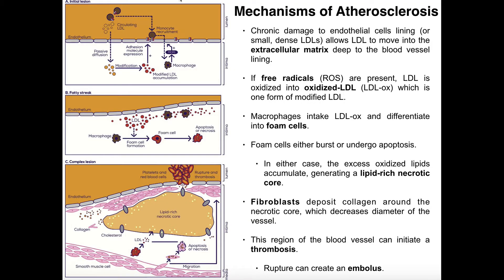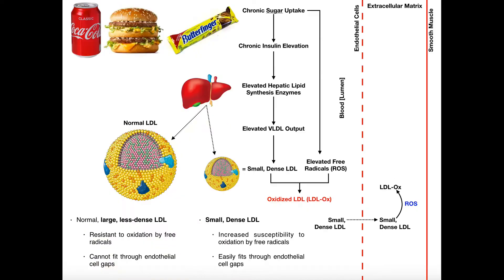I've got a schematic over here that you can follow along on. But before we get into that, I want to do a brief review of some of the things that chronic insulin elevation will cause. Remember, chronic high sugar intake, well above what the body actually needs, leads to elevated insulin production by the pancreas, and when that insulin production is elevated chronically, it creates a whole host of problems.